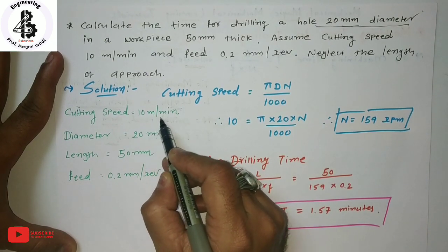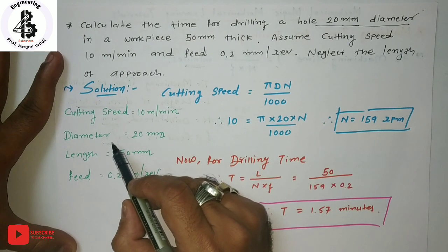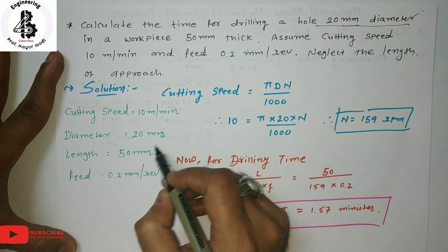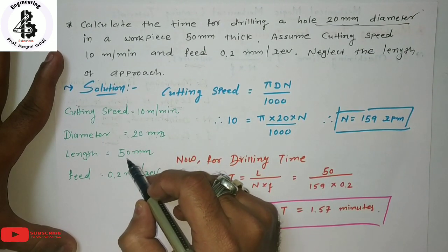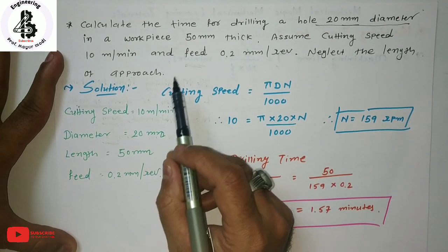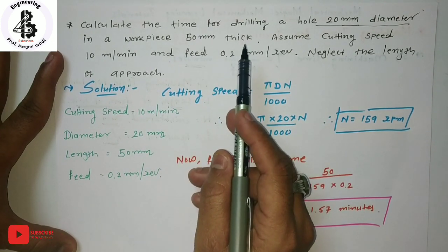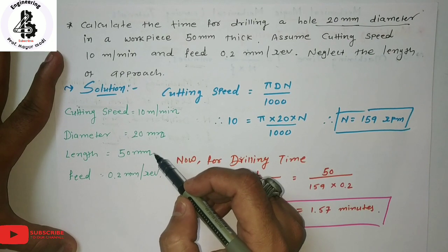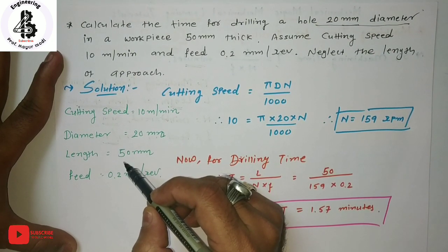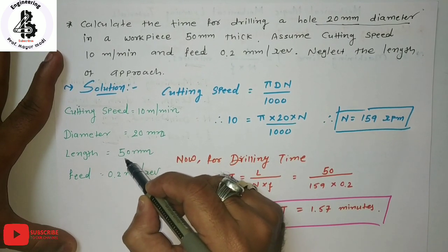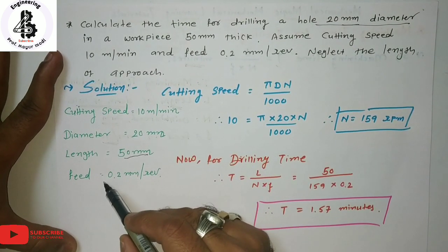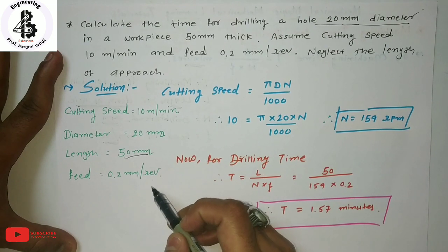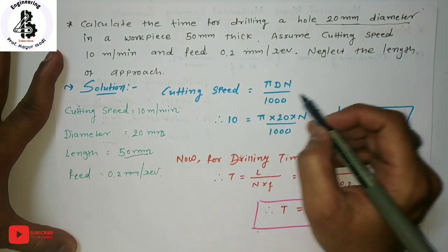From the given data: cutting speed is 10 meters per minute; diameter of the drill bit, which is also the required hole diameter in the workpiece, is 20 mm; total length of the drill — or thickness of the component, which we consider as the depth of the through hole — is 50 mm; and feed is 0.2 mm per revolution.